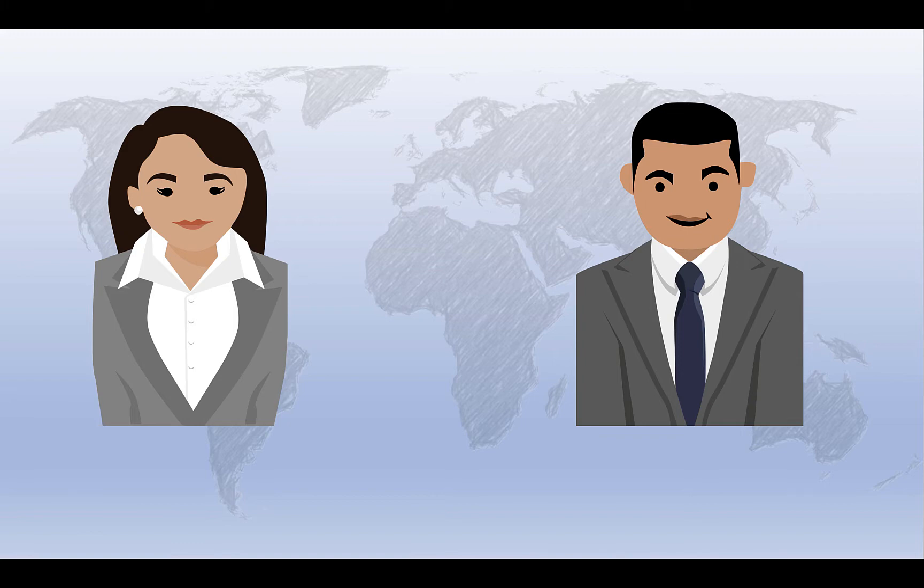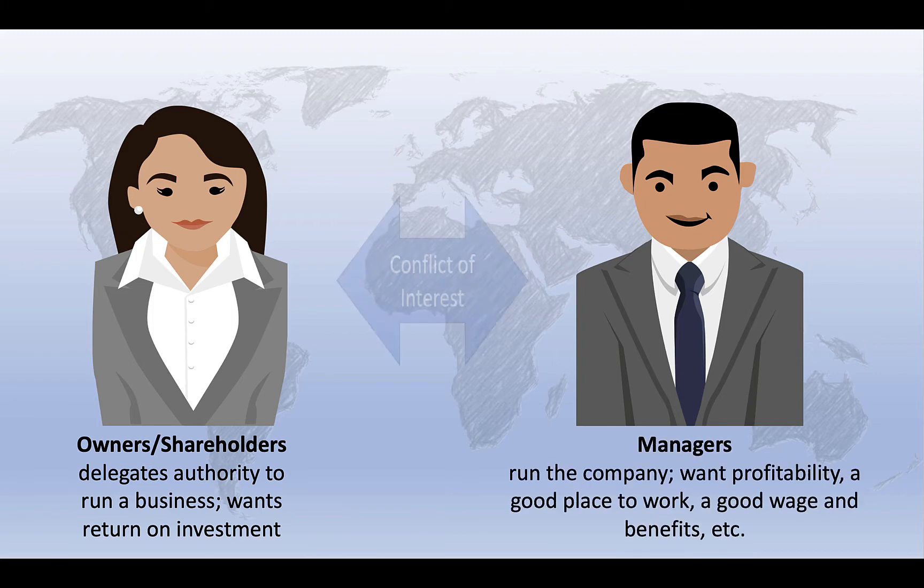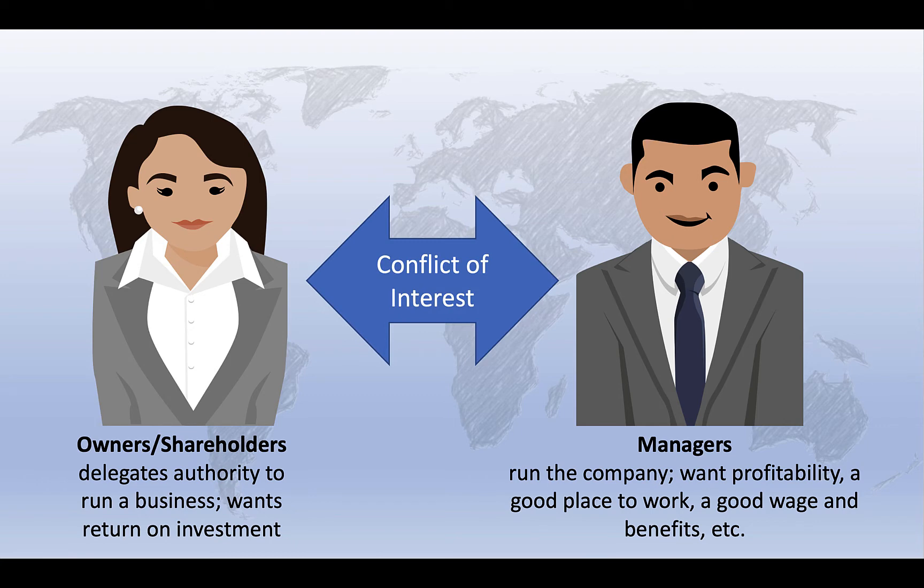In its simplest form, it describes the tension between the principals, the owners of a company or the shareholders who wish to maximize profits and increase stock dividends, and their agents, the managers of a company, who may be driven by a number of other motivations beyond or at least in addition to simple profitability.